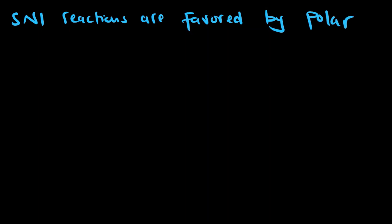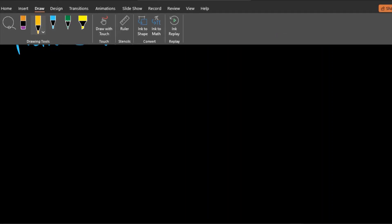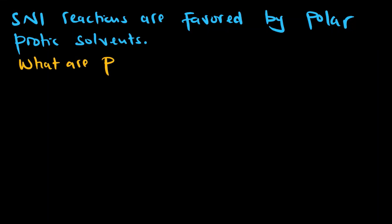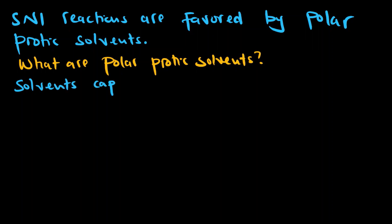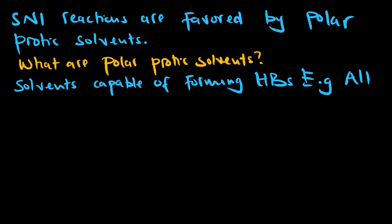SN1 reactions are favored by polar protic solvents. Polar protic solvents are simply solvents capable of forming hydrogen bonds. Examples include all alcohols and water. Anything that has a lone pair of electrons that can interact to form hydrogen bonds is a polar protic solvent — that's very important to know.